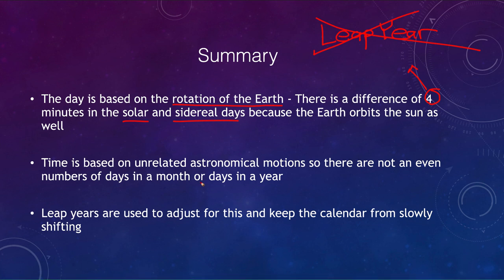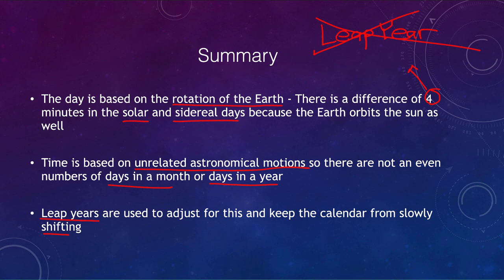Time is based on unrelated astronomical motions, which is why there are not even numbers of days in a month or in a year — nothing comes out evenly because the motions are independent of each other. Leap years are used to adjust and keep the calendar from slowly shifting over time. That completes this lecture on time and the calendar; we'll be back next time for another topic in astronomy.